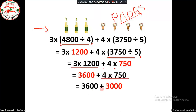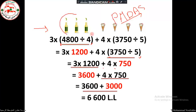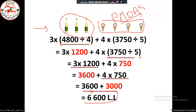Finally, we have an addition operation. We add three thousand six hundred to three thousand, and the answer is six thousand six hundred Lebanese lira. So the price of three bottles of lemonade and four cones of ice cream is six thousand six hundred Lebanese lira.